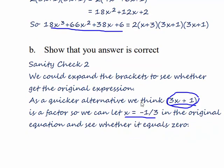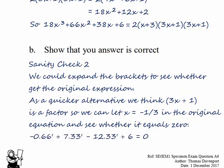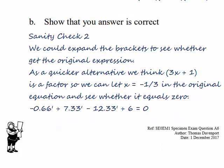So if we put that into the original equation, we've got 18 over minus 27, which is minus 0.6 recurring. We've got 7.3 recurring. We've got 38 over minus 3, which is minus 12.6 recurring. And we've got 6, which adds up to zero. So we can see our answer is correct.